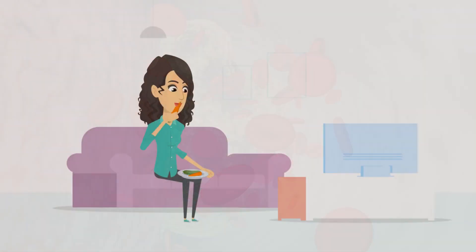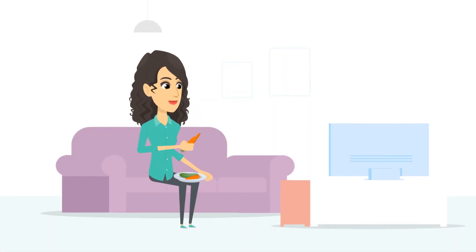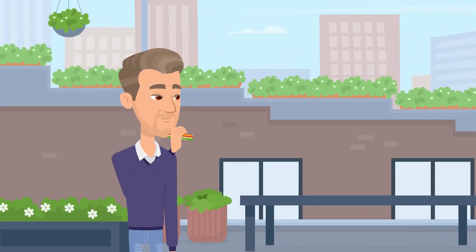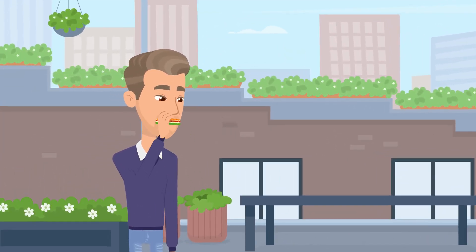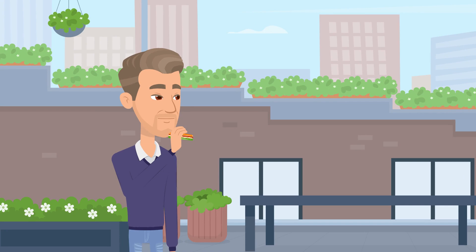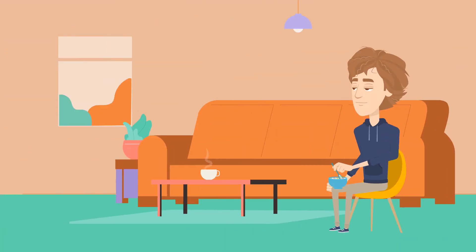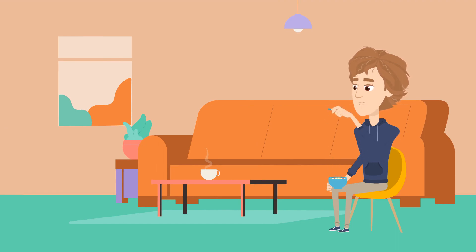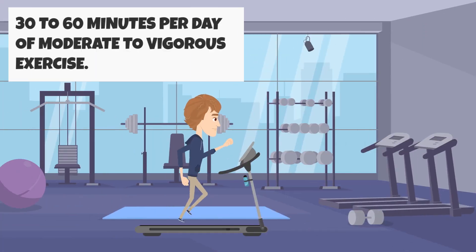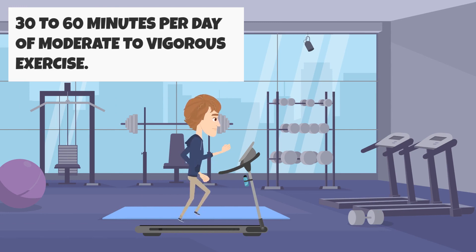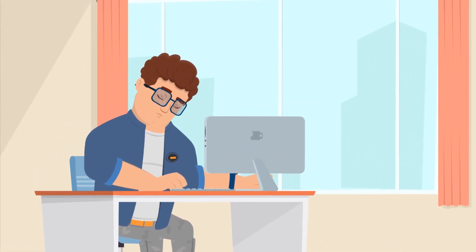An important non-drug related intervention in dyslipidemia is a diet aimed at reducing blood lipid levels, and also weight loss if needed. These dietary changes should always be a part of treatment, and the involvement of a dietitian is recommended in the initial evaluation and in follow-up as well. Other lifestyle modifications include 30 to 60 minutes per day of moderate to vigorous exercise, smoking cessation, stress management, and getting 6 to 8 hours of sleep at night.